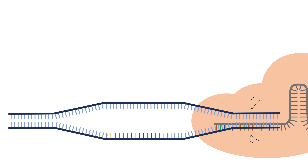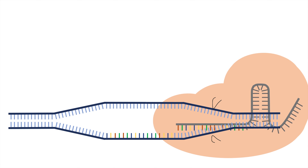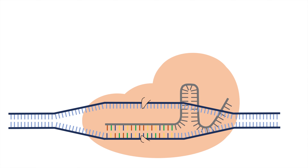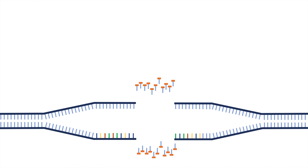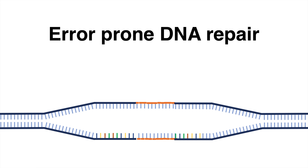The CRISPR-Cas complex searches for the sequence of interest until the guide RNA hybridizes with the DNA. When there is a PAM sequence downstream of the target region, the nuclease domains become active and create cuts, resulting in a double-strand break. This break is repaired in an error-prone manner, causing mutations and most likely also gene knockout.